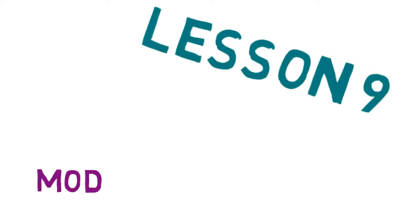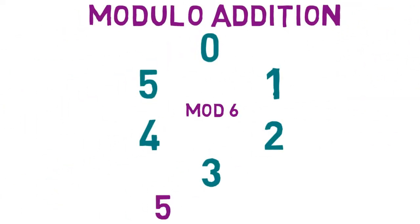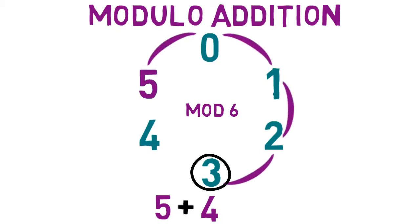Lesson 9: Modulo Subtraction. In the previous lesson, you discovered how to do modulo addition by counting numbers placed in a circle in a clockwise direction.